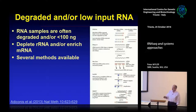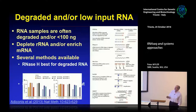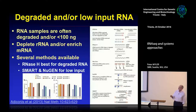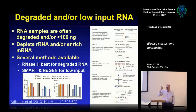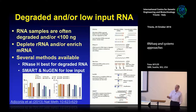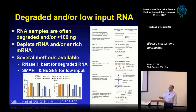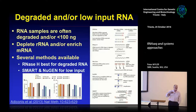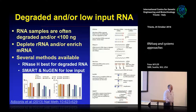For degraded RNA, the RNase H approach is typically best — it uses oligonucleotides to specifically degrade ribosomal RNA. There are also amplification techniques for low-input RNA. This graph shows about 80% concordance between results using these techniques on low-input or poor-quality RNA versus good-quality RNA. So you can rescue samples that aren't great, but if you can get better RNA, you'll be better off.